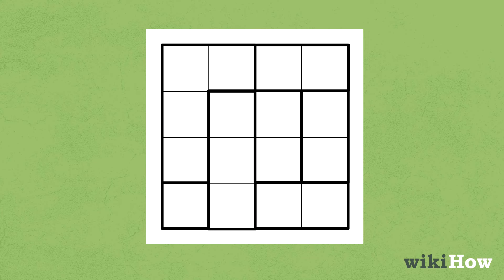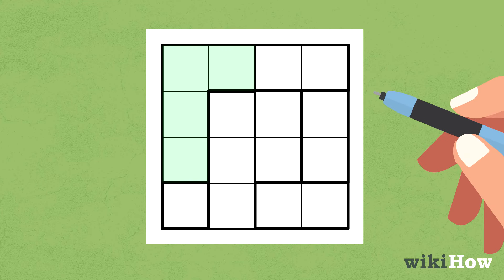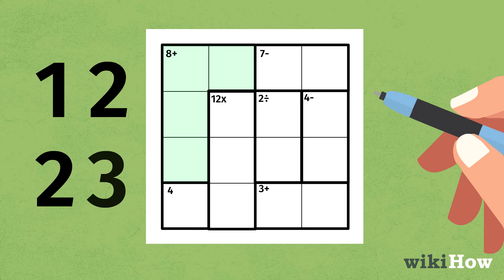The number and operator at the top of each cage is the goal, or answer, of written numbers inside. For example, if you have an L-shaped cage labeled 8+, then the 4 numbers in that cage must add up to 8, like 1, 2, 2, 3.